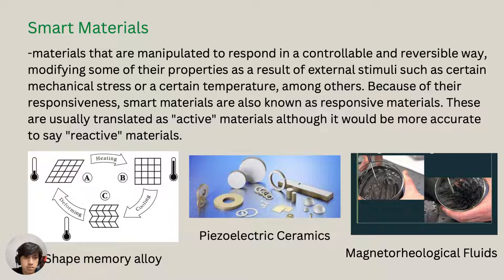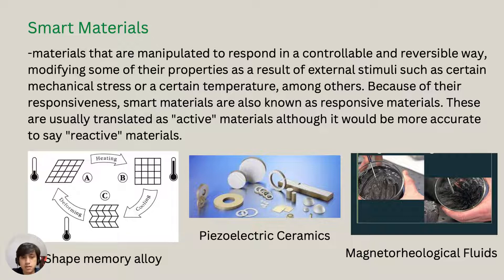Next are smart materials — materials that are manipulated to respond in a controllable and reversible way, modifying some of their properties as a result of external stimuli such as mechanical stress or temperature. Because of their responsiveness, smart materials are also known as responsive materials, and are often described as reactive materials. Examples include shape memory alloys, piezoelectric ceramics, and magnetorheological fluids.